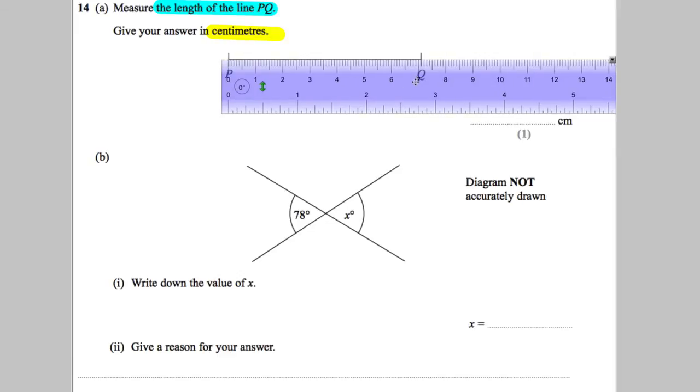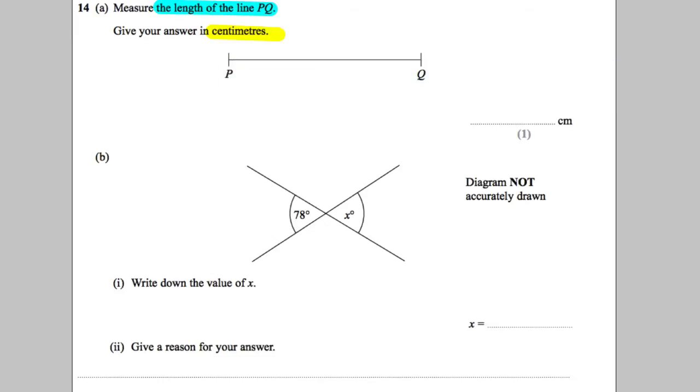And the answer was about seven, was seven in the exam. Okay, so you would have to write seven centimeters, seven centimeters.